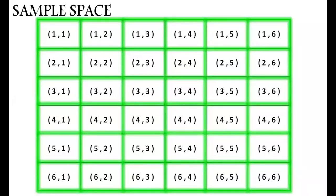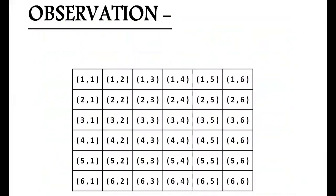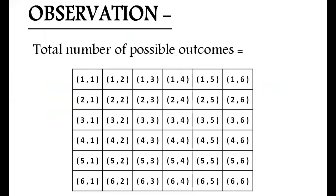Here we have arranged the outcomes in a proper manner. Observe the pattern of outcomes — if you arrange them in such a manner it will be easier to answer the questions asked. From the table, the total number of possible outcomes is equal to 36.